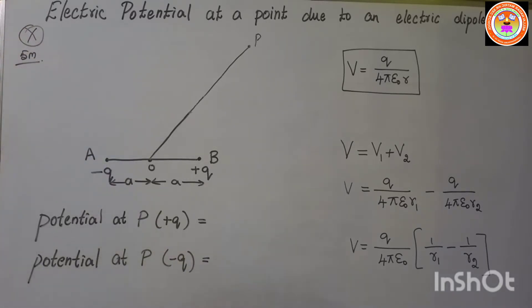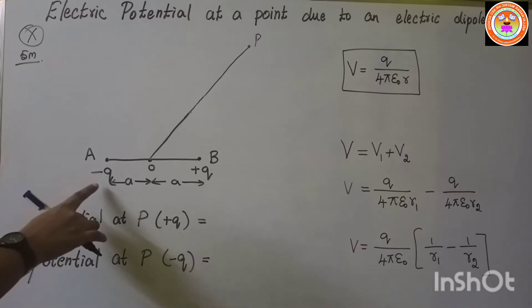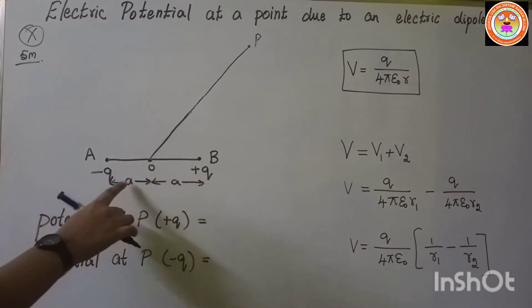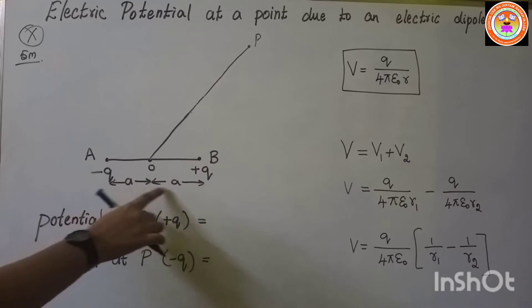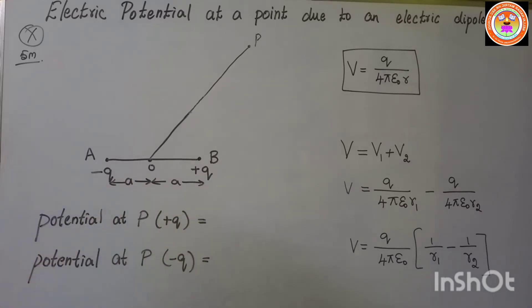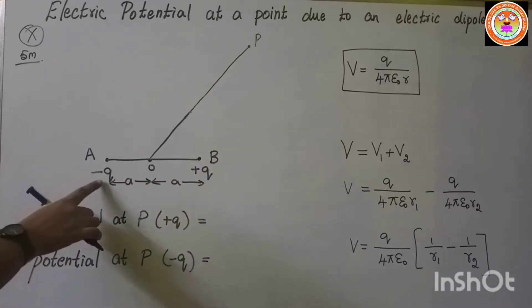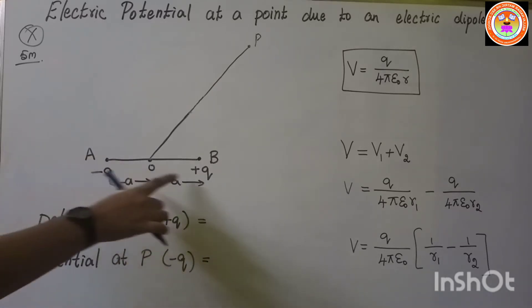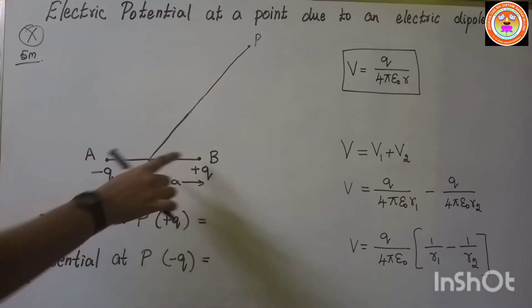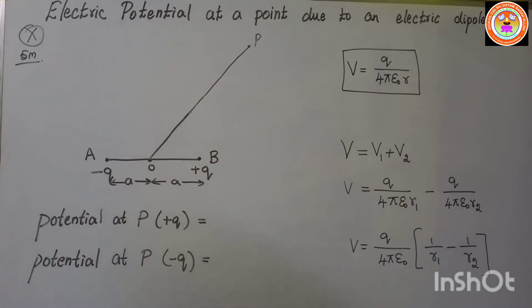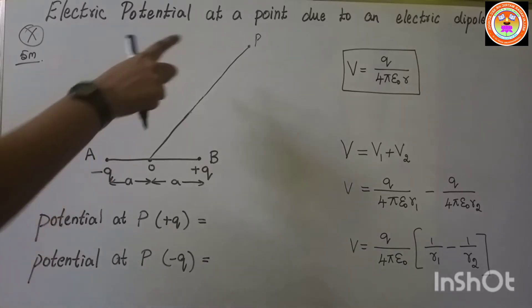For the electric dipole, I am taking one electric dipole — that is minus q charge and plus q charge separated by a small distance 2a. The minus q charge is at point A, plus q charge at point B. In this electric dipole, I am going to consider one point P.